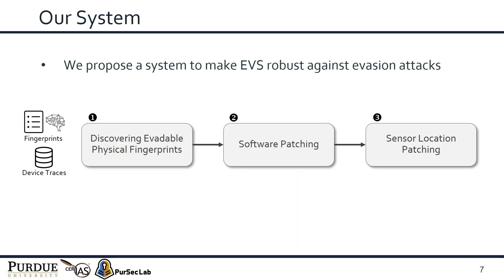To protect smart homes against these attacks, we propose a robust physical fingerprinting system with three main stages. First, we discover the evadable physical fingerprints of the EVS. Second, we conduct software patching to prevent a subset of these attacks, but we show that software patching unfortunately cannot prevent all evasion attacks. To prevent the remaining attacks, we propose sensor location patching, a security-by-design approach that requires placing sensors in a smart way to ensure the physical fingerprints for each event are unique.